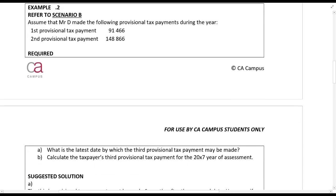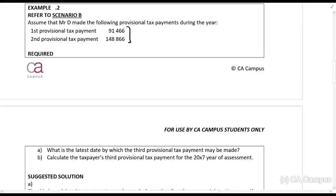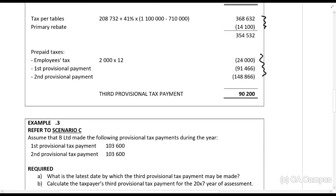Let's look at example two. Mr. D had the following provisional tax payments — first and second provisional tax. The difference here is that his taxable income was R1.1 million. So, R1.1 million — calculate the taxes, deduct all of the prepaid taxes — that gives him R90,200. Because there's an amount that this person still has to pay in, it is recommended that he makes the third provisional tax payment. If he does not, SARS will assess him at some stage for interest since the end of the tax year. So he should probably pay the third provisional tax of R90,200 to avoid unnecessary interest.